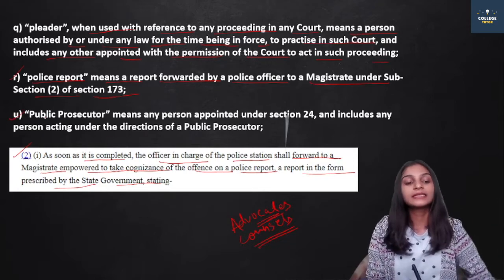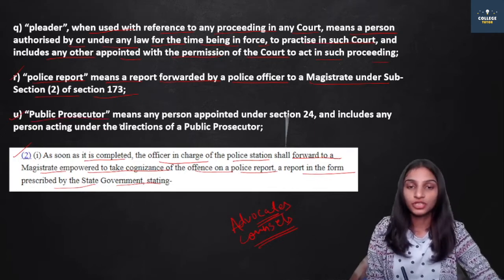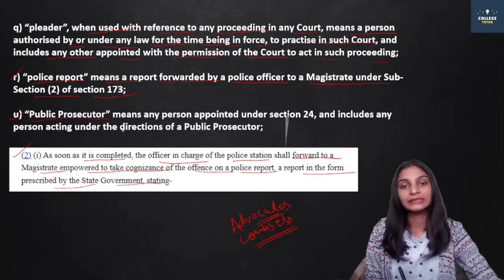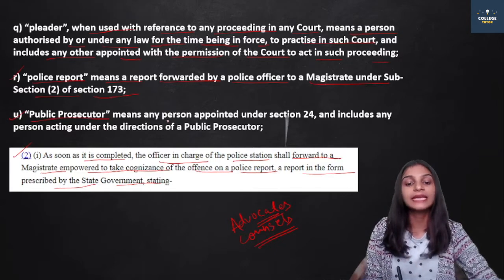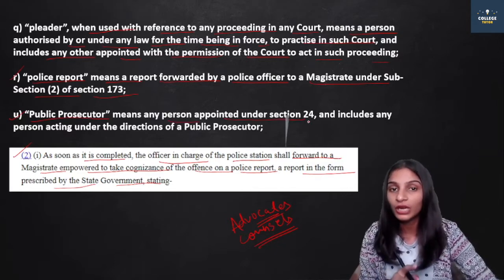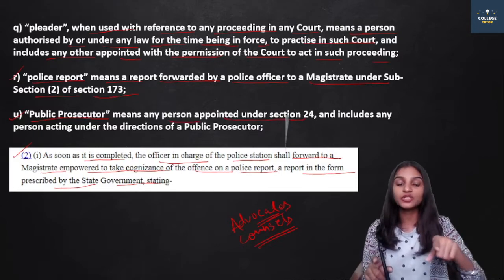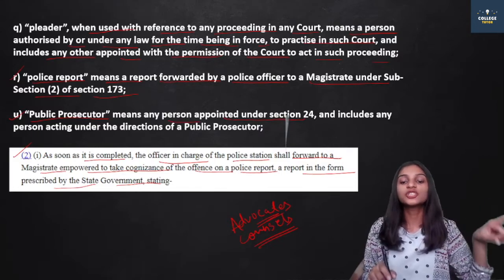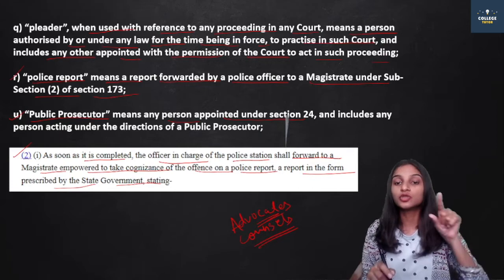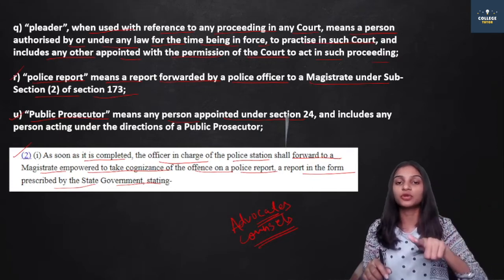In clause U, we have talked about the Public Prosecutor. Public Prosecutor means any person appointed under Section 24 of the CRPC, which deals with who a public prosecutor is.